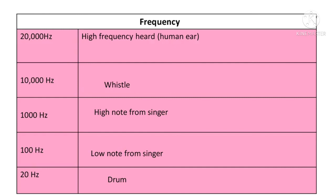This chart shows frequency examples: the highest frequency heard by a human ear is 20,000 Hz; a whistle is about 10,000 Hz; a high note from a singer is about 1,000 Hz; a low note from a singer is about 100 Hz; and a drum is about 20 Hz.